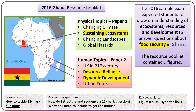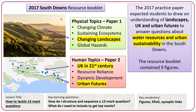Let's look at some previous resource booklets. In 2016 there was a resource booklet featuring the entire country of Ghana, drawing on three topics: ecosystems, resource reliance, and development, with a big focus on food security in the 6 and 12 mark questions. It contained nine figures. In 2017 there was a practice paper on the South Downs National Park in East and West Sussex, with three main topics — landscapes, UK, and urban futures — asking students to write about water resources and urban sustainability. That booklet also contained about nine figures.